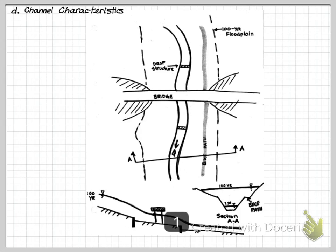It is important when looking at channels to be clear about what you are seeing pictorially. The top view, or plan view, of a channel system shows features such as a bridge, a dashed floodplain line, a bike path, a low channel with drop structures inside it. Drop structures are a way to control the river. Looking at cross-section AA, you can see the low-flow channel in the middle where the drop structures are located, the two-year system contained within, the bike path, and the hundred-year floodplain extent. A profile view of the river shows the drop structures, the bridge, and how the hundred-year flow rate might appear within the system.